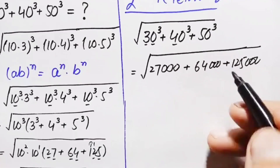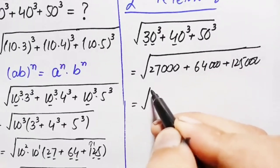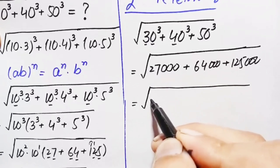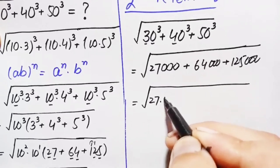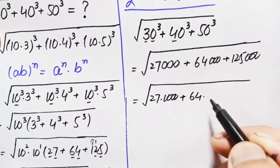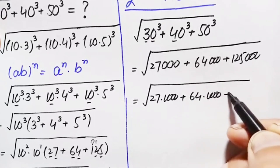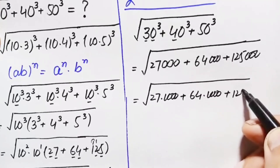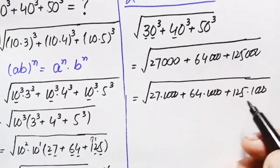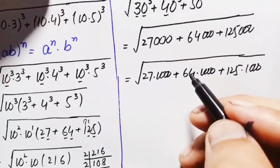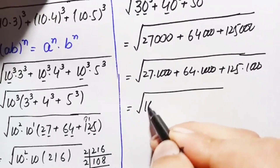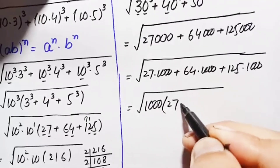Adding these three numbers: 27,000 + 64,000 + 125,000. We can factor this as 1000×(27 + 64 + 125). Since 1000 is common in all three terms, we take it out, giving us the square root of 1000 times (27 + 64 + 125).